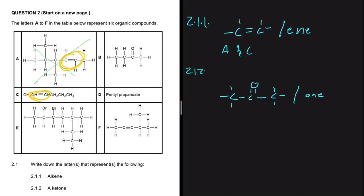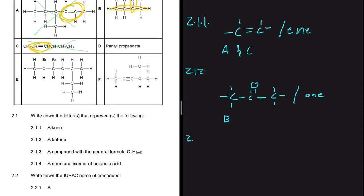Compound A is an alkene, so it cannot be part of our solution. Looking at B, we have a carbon bonded to an oxygen and two other carbons, so B is our ketone. The answer for 2.1.2 is B. Compound C is also an alkene, and D, E, and F don't have what we're requiring.